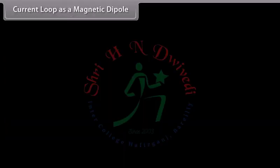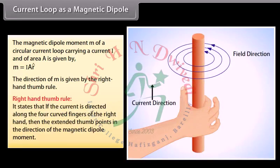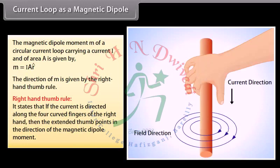Current loop as a magnetic dipole: The magnetic dipole moment M of a circular current loop carrying current I and of area A is given by M = I A R-cap. The direction of M is given by the right-hand thumb rule, which states that if the current is directed along the four curved fingers, then the extended thumb points in the direction of the magnetic dipole moment.